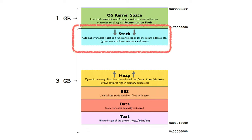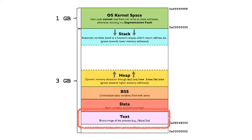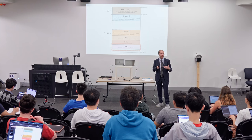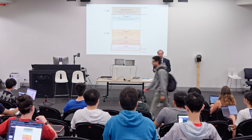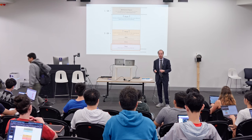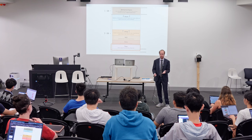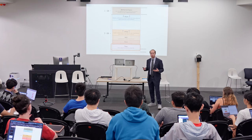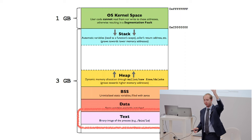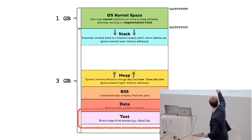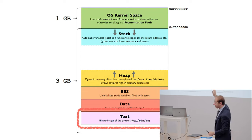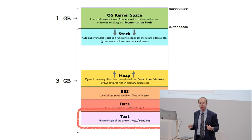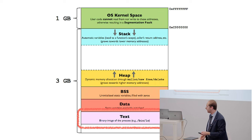The text component is interesting — it says 'binary image of the process.' In plain English, all the code you've written has to be put in memory for the computer to run it. When you run the program and the OS sets up the memory, it has a place for all the variables — the main place being the stack — has the place for the operating system, but it also has a place for the program itself, for all the code you've written that's now been converted into machine code.